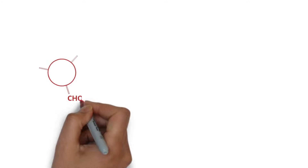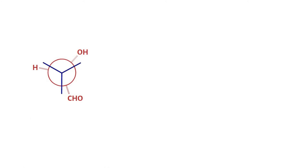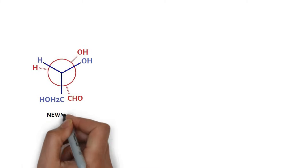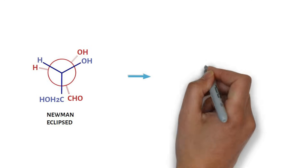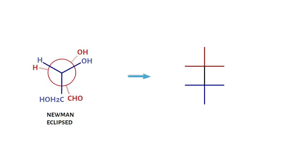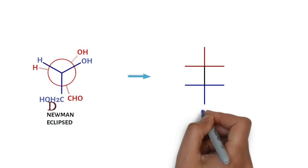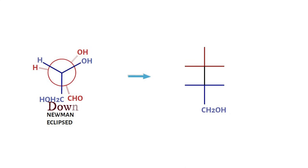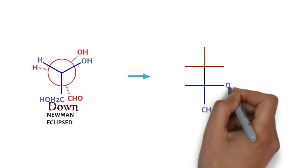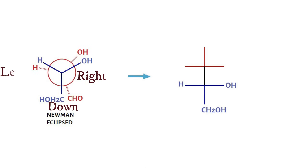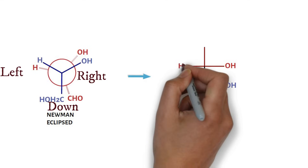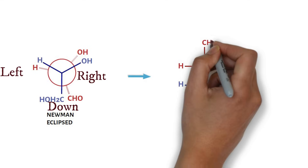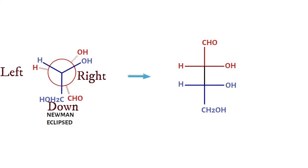Consider this eclipsed Newman projection. Using our trick, this can be directly converted into Fischer projection. The hydroxymethyl group on the front carbon goes down and is written on the bottom of Fischer projection. The OH group is on the right and H on the left side. On the back carbon, OH is on the right and H on the left side. The aldehyde group goes down and is written on top of the Fischer projection.